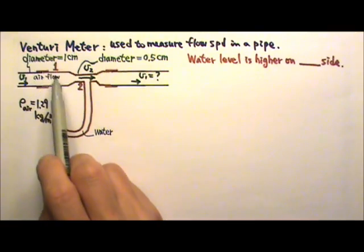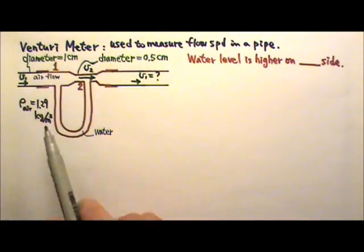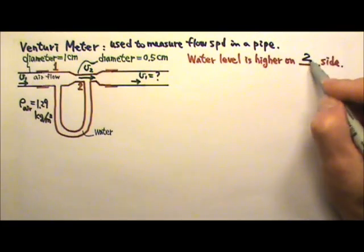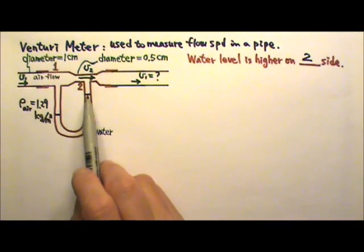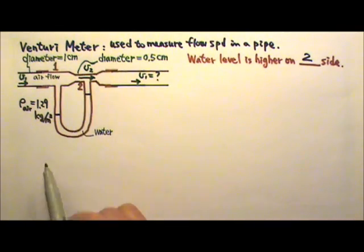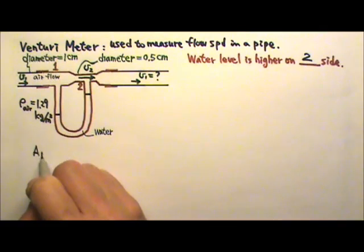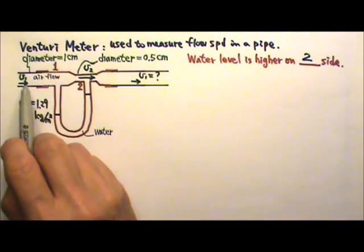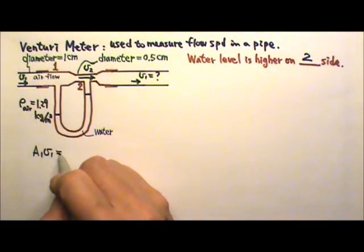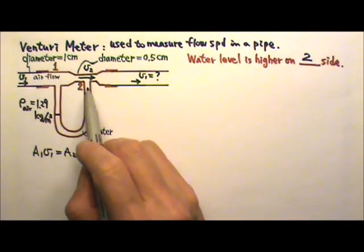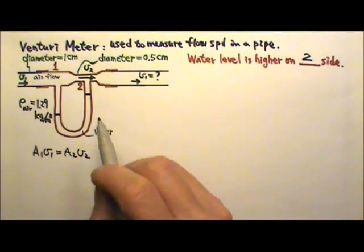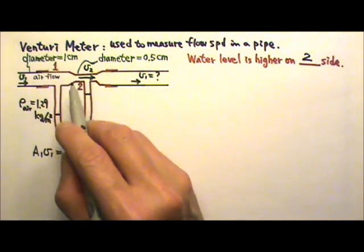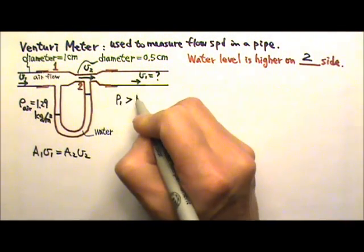I'm going to use 1 for this side, 2 for that side. The water level should be higher on the 2 side. The equation of continuity says that A1V1 equals A2V2 for this smooth flow. Since A2 is smaller, that means V2 must be faster. And according to Bernoulli's principle, the faster flow has a lower pressure. So P1 must be higher than P2.